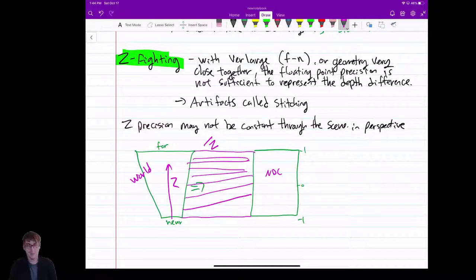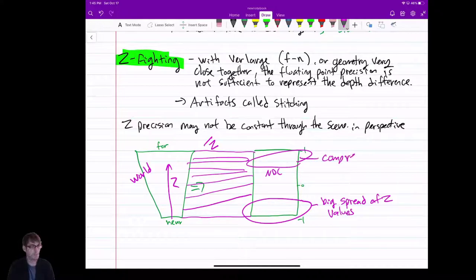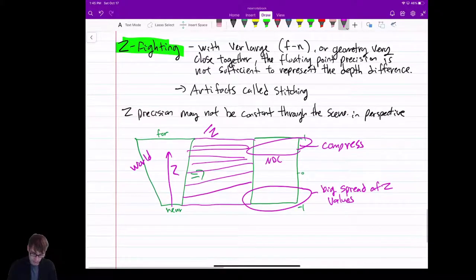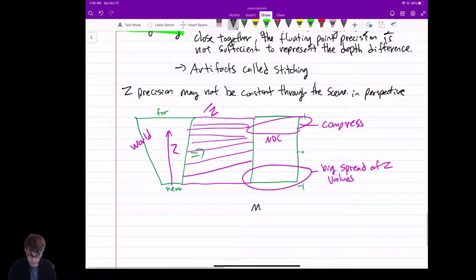And so what happens is you get this kind of compression where when things are close to you, you get a big spread of z values very nicely. But when they're far away, they compress. So then, to say it another way, we have more precision close to the near plane.